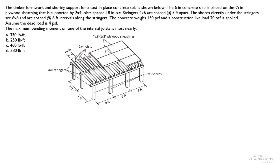So this gravity load is going to transfer through this plywood sheeting to the joist and then transfer to the stringers, the longitudinal stringers, and then finally directly applied to these shores. This question we're going to determine the maximum bending moment on one of the internal joists.